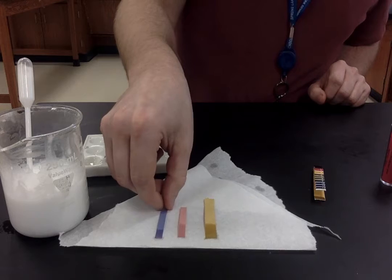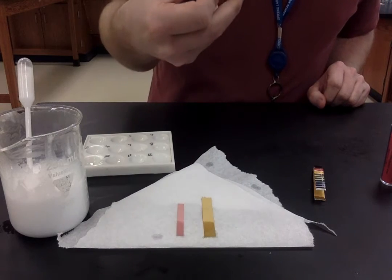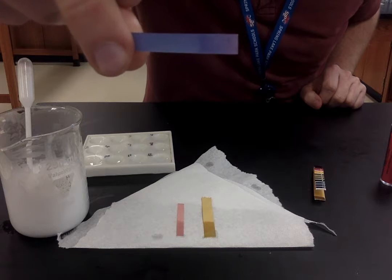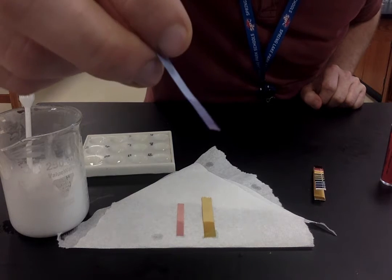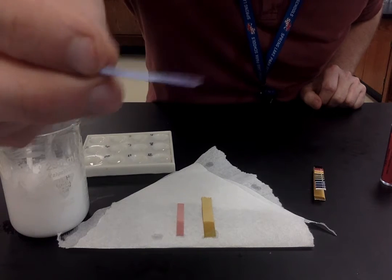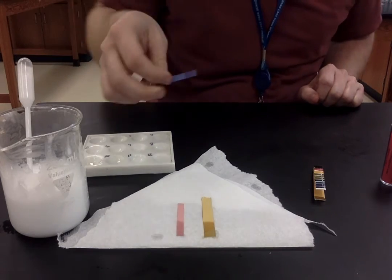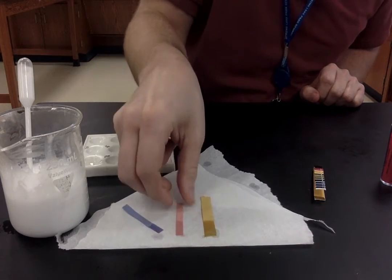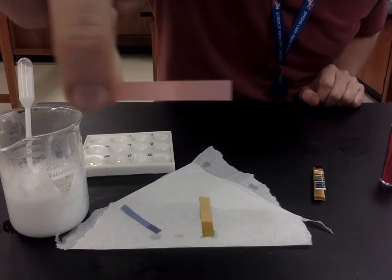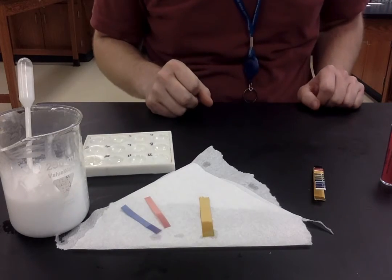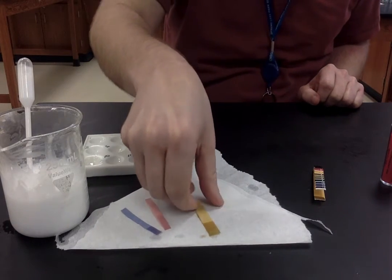Okay, so first up is the blue litmus paper. You can kind of see when I hold that up there, it's mostly still blue, maybe slightly red on the end here, but mostly still blue. So you write down blue. Red litmus paper is red. So think about it: if it's blue and red, what type of thing is that? Is that acid, base, or neutral compound?